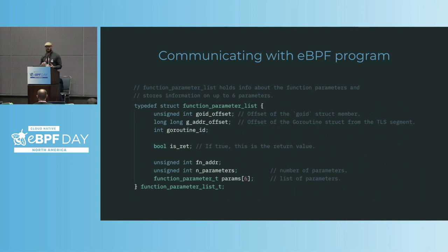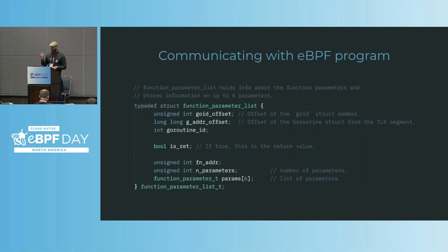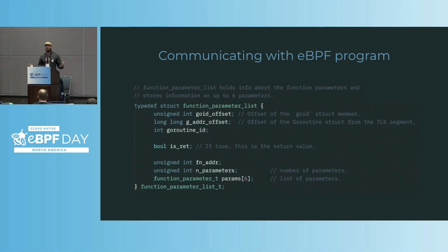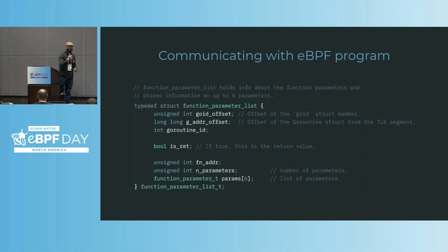We store this information in a map keyed by the instruction address. When the eBPF program is triggered, it can look at the current instruction pointer value, look up in the map the information it needs to decode everything, and then run and do its thing. We put in a lot of information — like the goroutine ID offset, the g address offset (the offset of the goroutine from thread local storage). It's a lot of low-level information that the debugger already has, so instead of re-implementing a DWARF parser in eBPF, we provide as much context as possible from the user space side ahead of time.